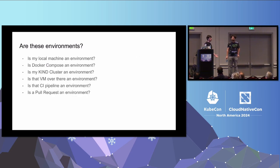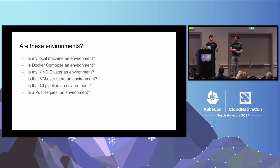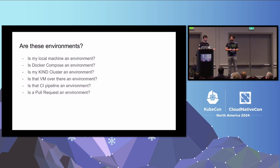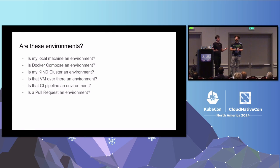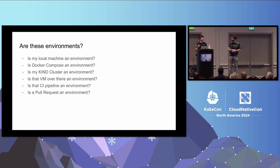If we think a little bit more about it: is my local machine an environment? Is my Docker Compose environment as well? What about a Kind cluster, VMs, CI pipeline? And maybe some of you never thought about this — what about a PR? When I open a PR against a repo, that PR may contain some manifests and software delivery artifacts that may constitute an environment.